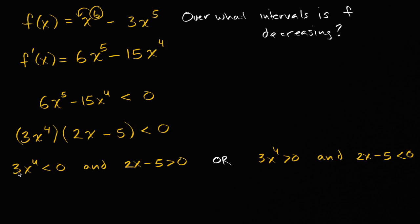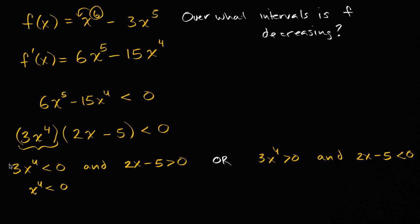For three x to the fourth to be less than zero, x to the fourth would need to be less than zero. But any real number raised to the fourth power is going to be greater than or equal to zero, so it's impossible for something to the fourth power to be less than zero. This case is never going to happen, so we can rule out that first case.